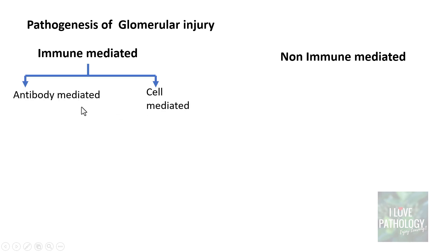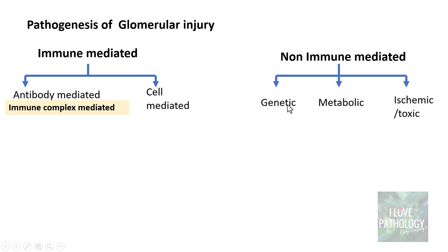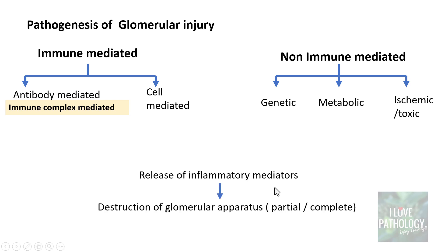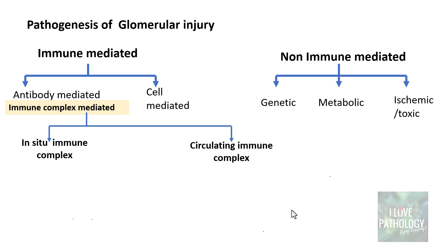Immune mediated can be antibody mediated — basically immune complex mediated or antigen-antibody complex mediated — or it could be cell mediated. Non-immune mediated could be due to genetic, metabolic, ischemic, or toxic causes. Whatever the basic pathogenetic mechanism, ultimately these lead to release of inflammatory mediators which destroy the glomerular apparatus. This destruction can be either partial or complete, leading to loss of glomerular filtration barrier function — that is glomerulonephritis.